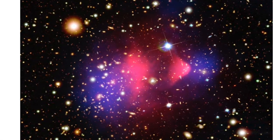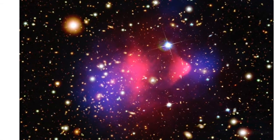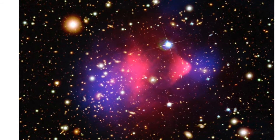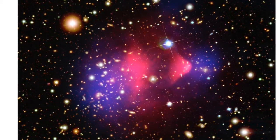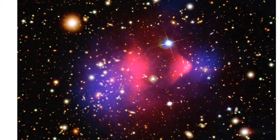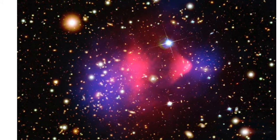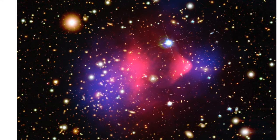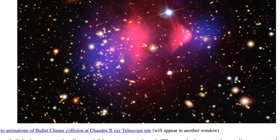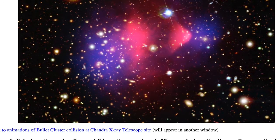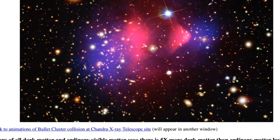Another galaxy collision, called MACS J0025.4-1222, shows the same sort of separation of dark matter from ordinary matter. By the way, the list of numbers in the names of these clusters tells us their right ascension declination coordinates on the sky.